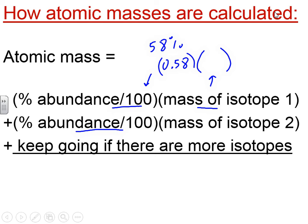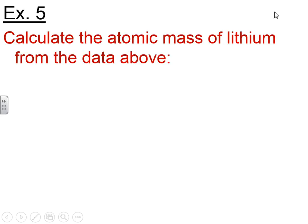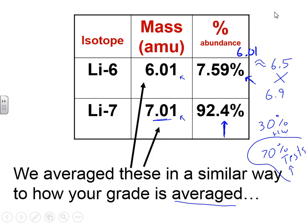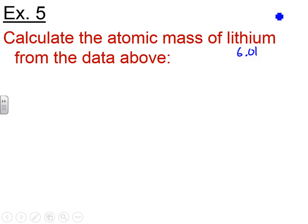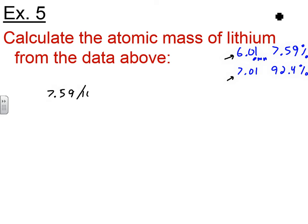Now let's apply the formula. Calculate the atomic mass of lithium from the data: lithium-6 has a mass of 6.01 AMU at 7.59%, and lithium-7 has a mass of 7.01 AMU at 92.4%. So we take 7.59 over 100 multiplied by 6.01, plus 92.4 over 100 times 7.01.